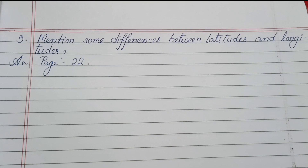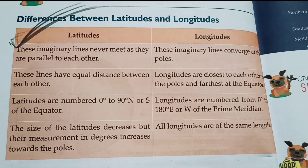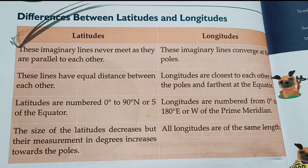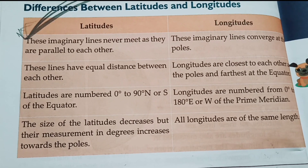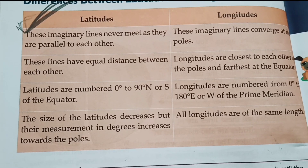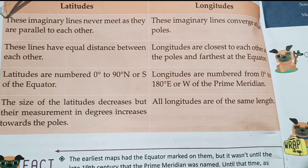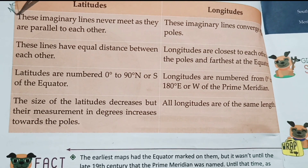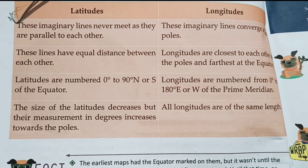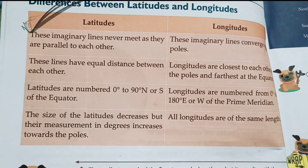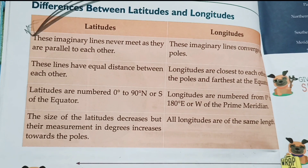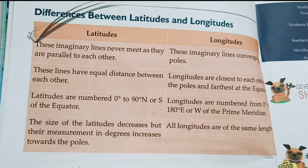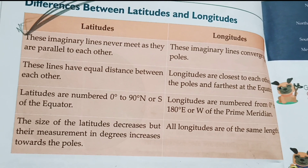Question 5: Mention some differences between latitudes and longitudes. Latitudes: (1) These imaginary lines never meet, as they are parallel to each other. (2) These lines have equal distance between each other. (3) Latitudes are numbered from 0° to 90° north and south of the equator. (4) The size of latitudes decreases but their measurement in degrees increases towards the poles. Longitudes: (1) These lines converge at the poles. (2) Longitudes are closest to each other at the poles and farthest at the equator. (3) Longitudes are numbered from 0° to 180° east and west of the Prime Meridian. (4) All longitudes are of the same length.